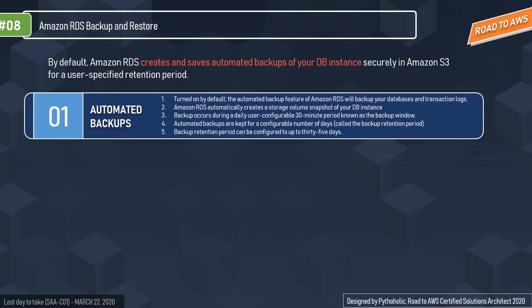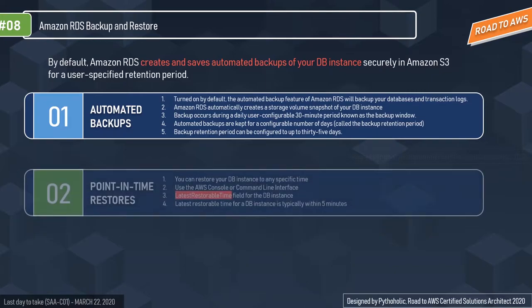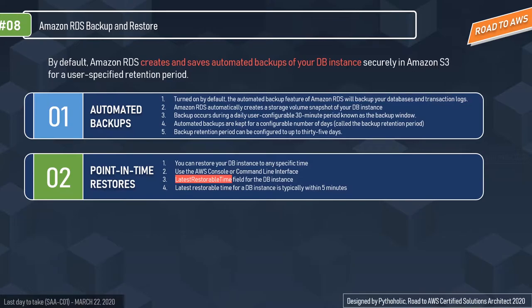The second point is point-in-time restores. You can restore your database instance to any specific time during the backup retention period, creating a new database instance. You can use the AWS console or command line interface to determine the latest restorable time for a database instance by looking at the value in the 'last restorable time' field. The latest restorable time is typically within five minutes of the current time.